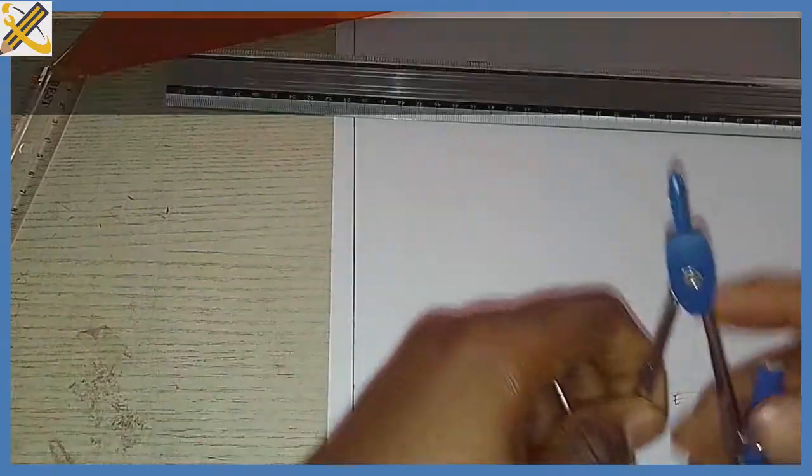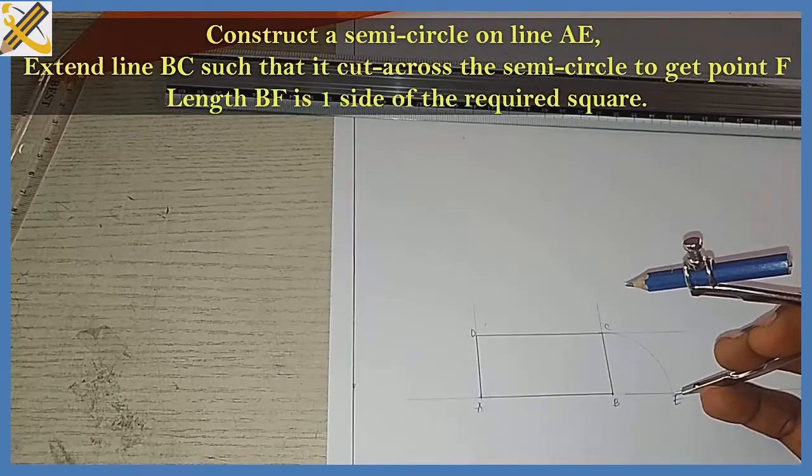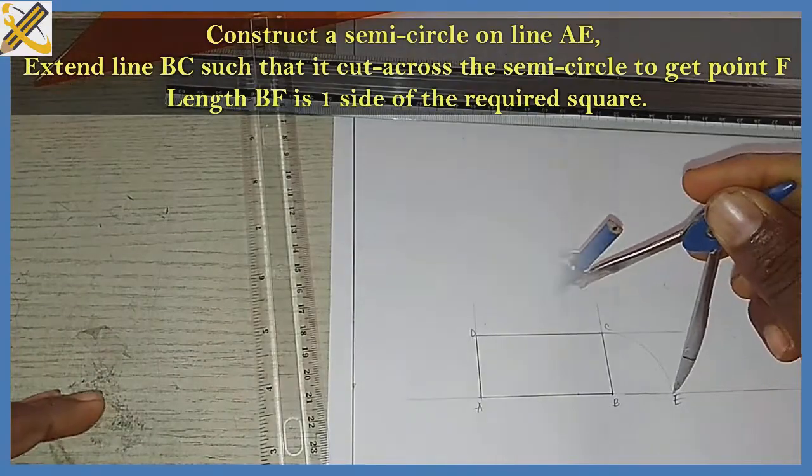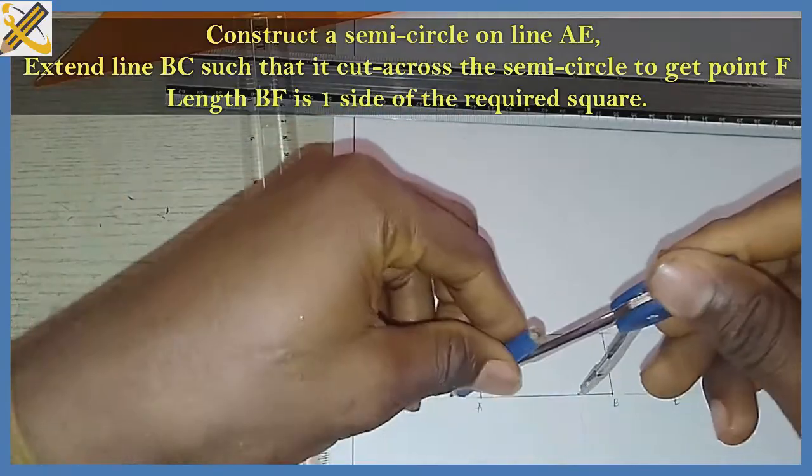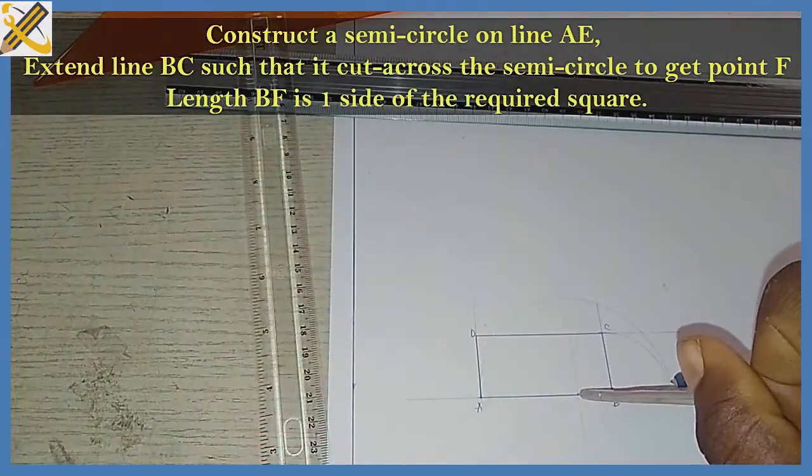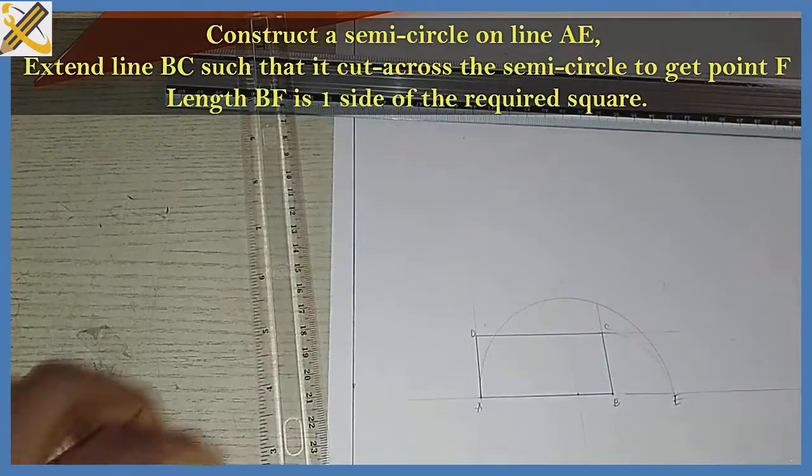After doing that, the next thing is to erect a semicircle on point AE. To get the midpoint there, I'm going to bisect it. This is the midpoint, then I'm going to draw a semicircle on point AE. That is the semicircle.